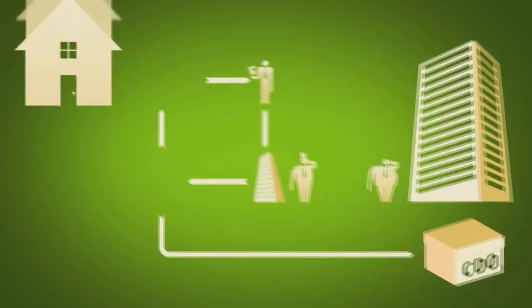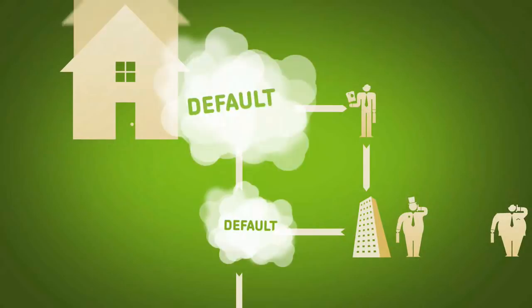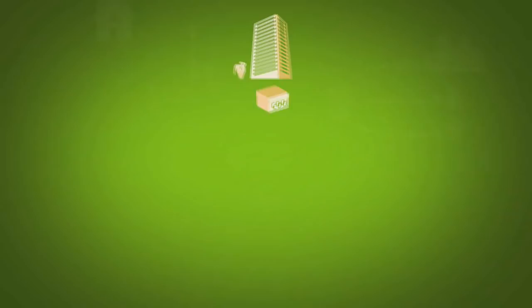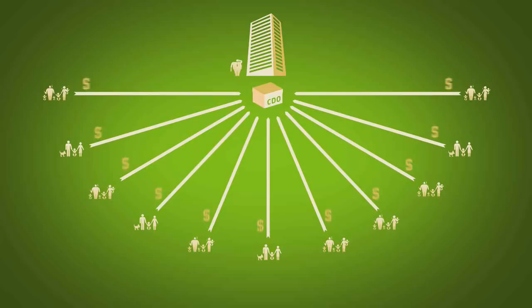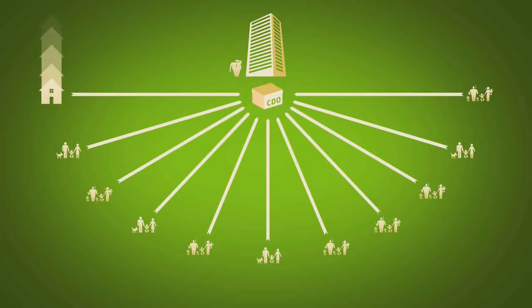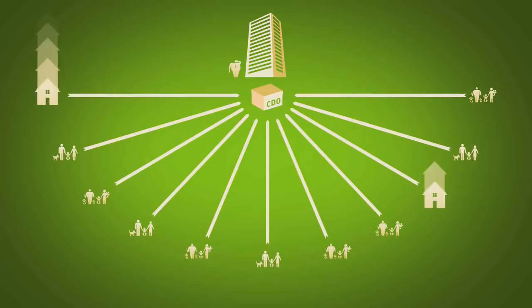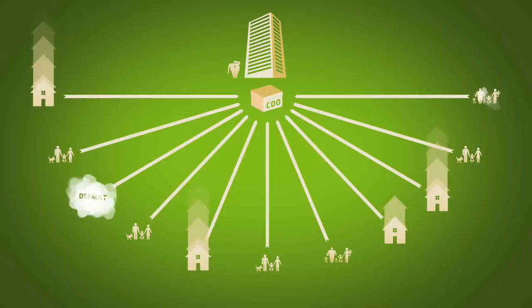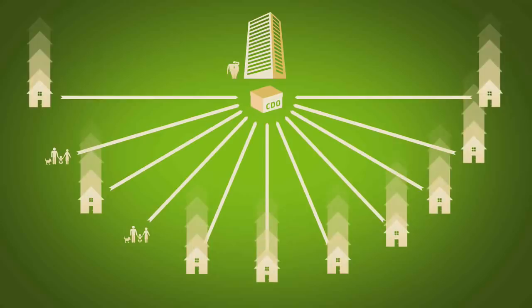Not surprisingly, the homeowners default on their mortgage, which at this moment is owned by the banker. This means he forecloses and one of his monthly payments turns into a house. No big deal, he puts it up for sale. But more and more of his monthly payments turn into houses. Now there are so many houses for sale on the market, creating more supply than there is demand, and housing prices aren't rising anymore. In fact, they plummet.